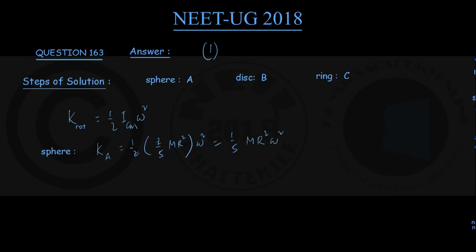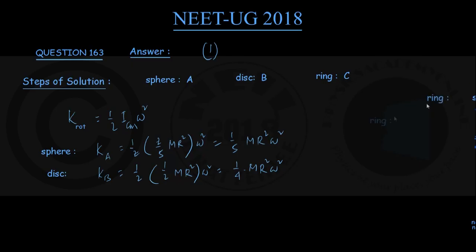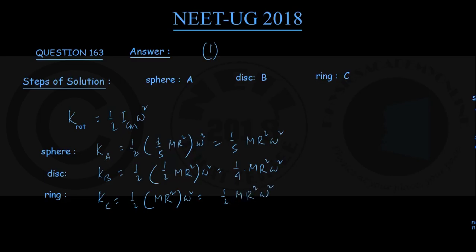Similarly, for the disk the rotational kinetic energy K_B is half times the moment of inertia for a disk, which is (1/2)mr², times omega squared, coming out to be (1/4)mr²ω². Finally, for the ring, K_C equals half times mr² times omega squared, coming out to be (1/2)mr²ω².